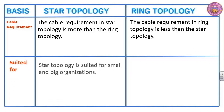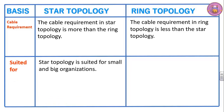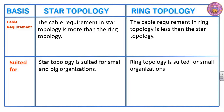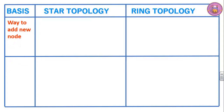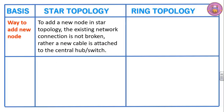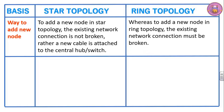Suited for. Star topology is suited for small and big organizations, whereas ring topology is suited for small organizations only. To add a new node in star topology the existing network connection is not broken; rather a new cable is attached to the central hub or switch. Whereas to add a new node in ring topology the existing network connection must be broken.